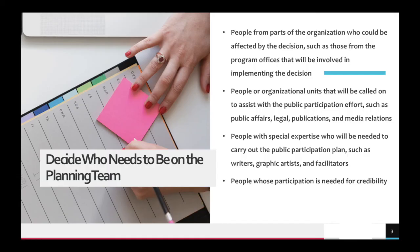Who needs to be in the planning team? There are basically two types of important people. First is your core working group — people that will actually be doing the work. That might be the project manager, people who help with public relations or updating the department website, communicating to the public, or the consultant. These are the people who do the work.